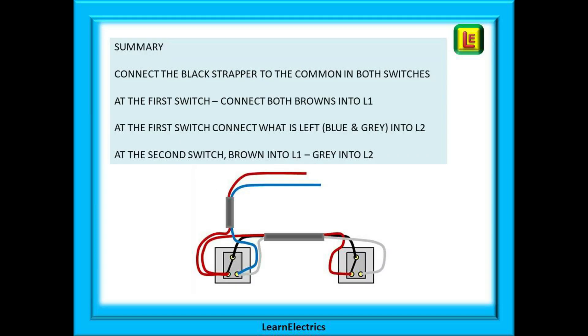We can have a quick summary of how to make the connections. They are very easy to remember. Connect the black strapper to the common in both switches. At the first switch, connect both browns into L1. And still at the first switch, connect what is left, blue and grey, into L2. At the second switch, brown into L1 and grey into L2. Job done. Finished.